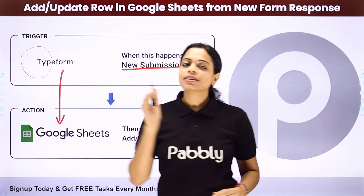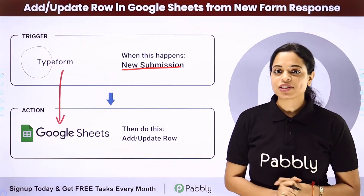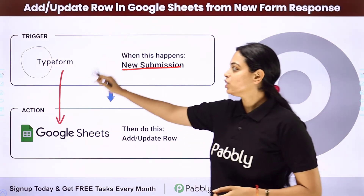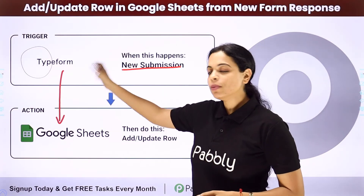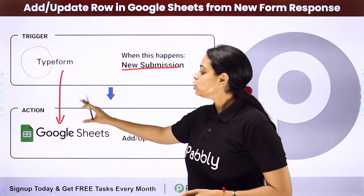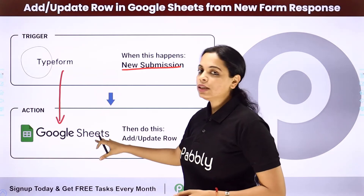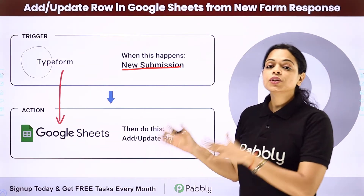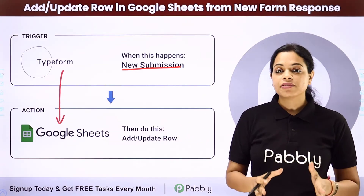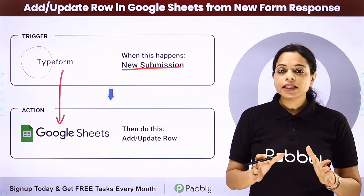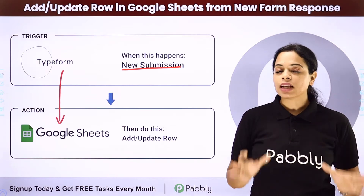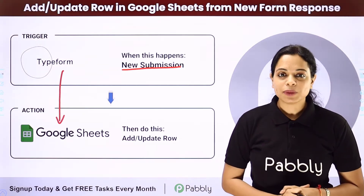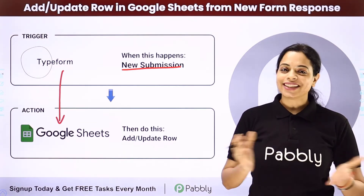The same thing can be done using Pabbly Connect software. Here your trigger application will be Typeform and your action application will be Google Sheets. To integrate and automate this entire process, let me take you to my screen.